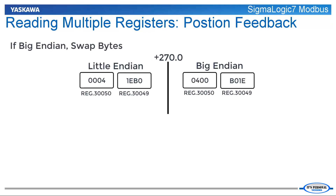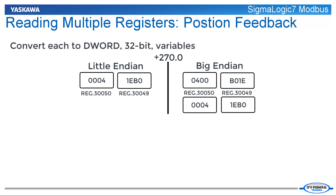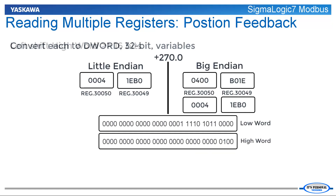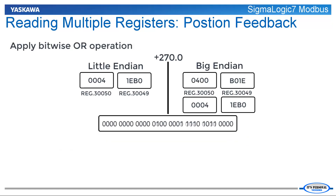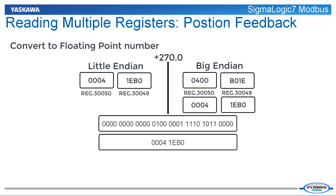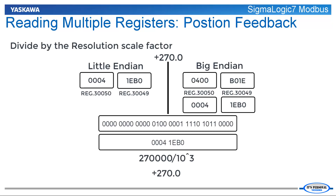First, if the controller stores the data in big-endian format, swap the bytes within both words to interpret the number correctly. Next, read both 16-bit registers into separate 32-bit variables, then shift the data in the high word 16 bits to the left. Apply a bitwise OR to combine the two registers into a single 32-bit number, then convert that value to a floating point number and divide by the resolution scale factor.